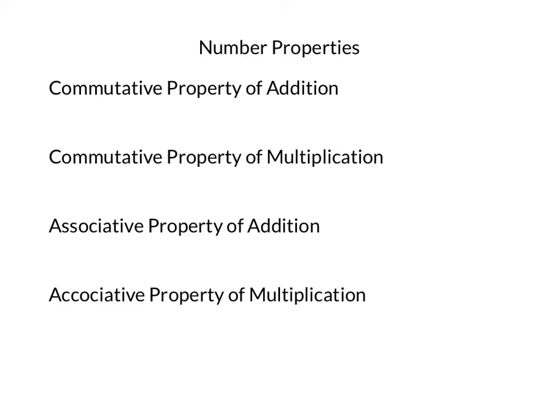The commutative property says that we can add and multiply numbers in any order without changing the sum or the product. The word commute, hopefully you're familiar a little bit with that, means to move. Like the morning commute and the evening commute is when people will actually move from home to school or work, and then the evening commute is school or work back to home.